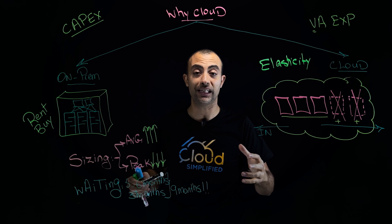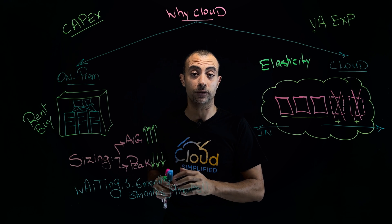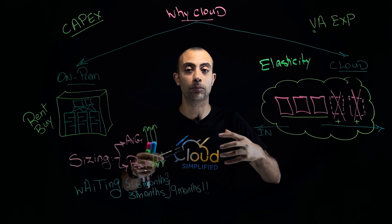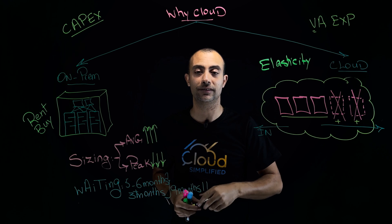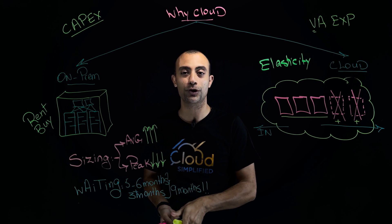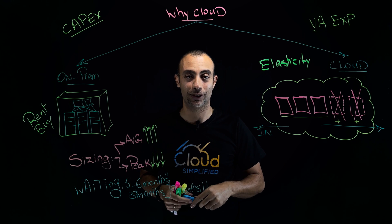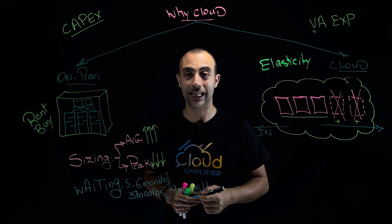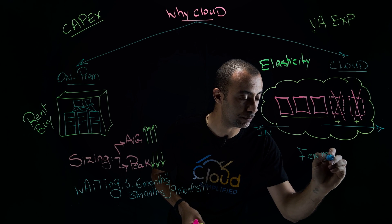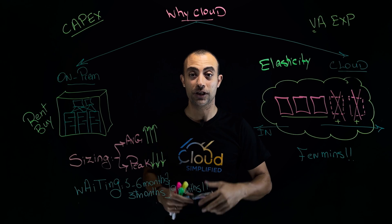There are no wasted resources like on-premise where you sized based on the peak. On the cloud you size according to the average, and if you need more resources on the spot, you can get them immediately. The waiting time on the cloud is simply a matter of minutes — whenever you need resources, you access your console and they're available.